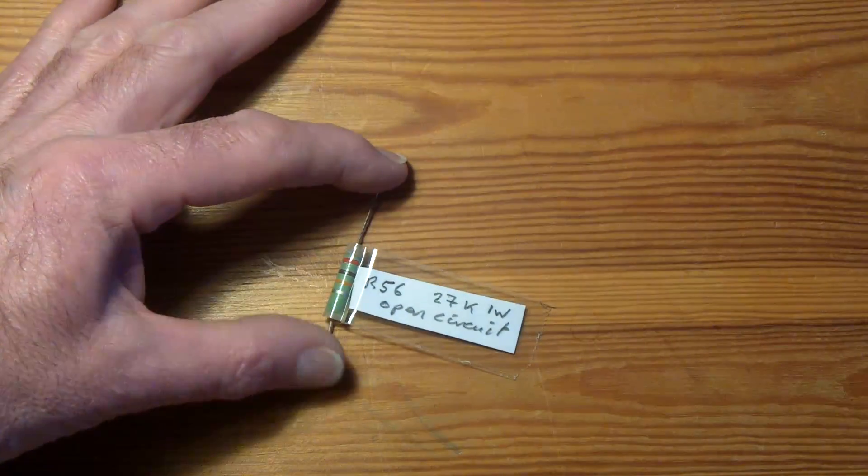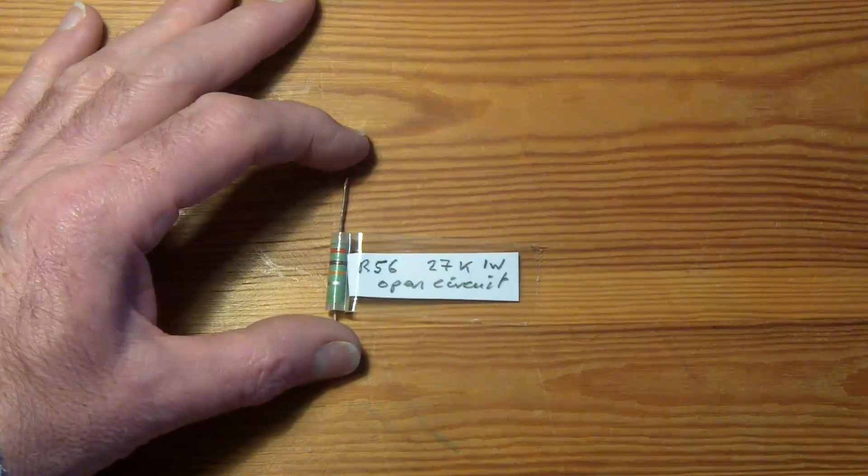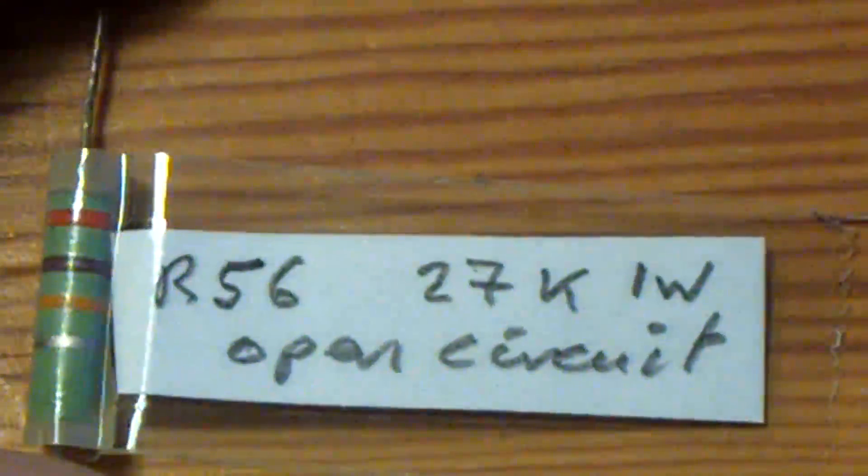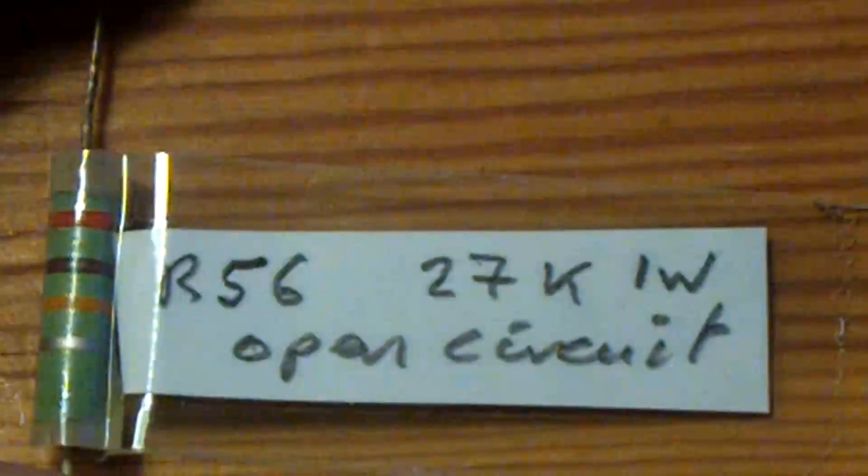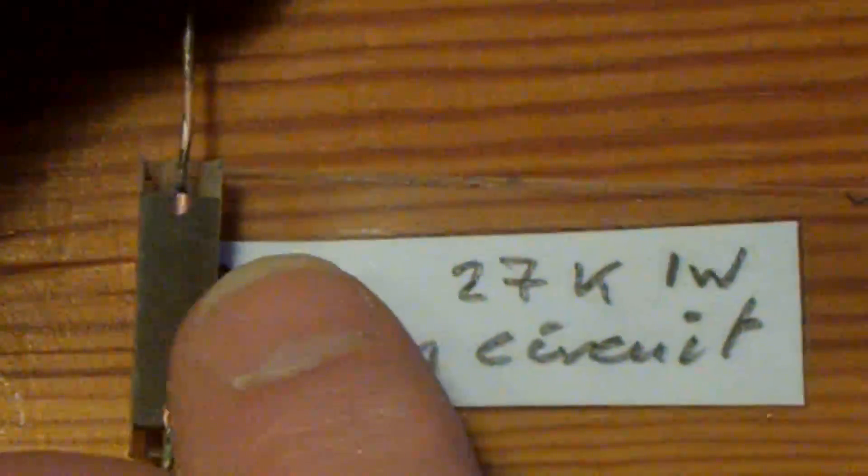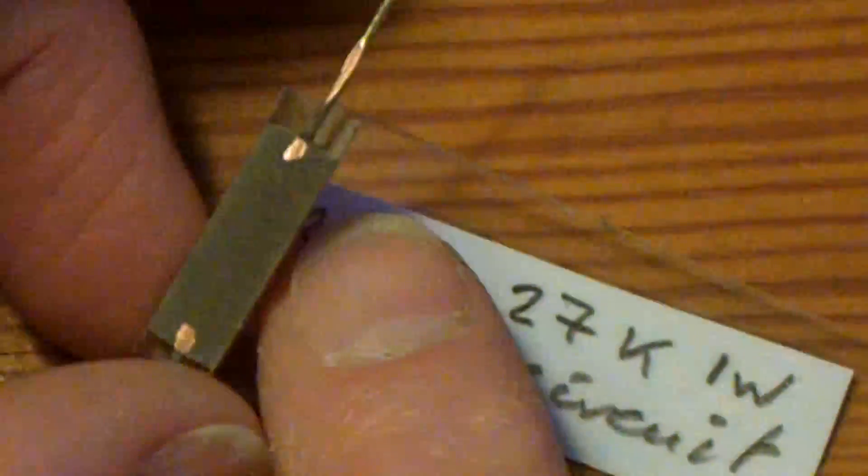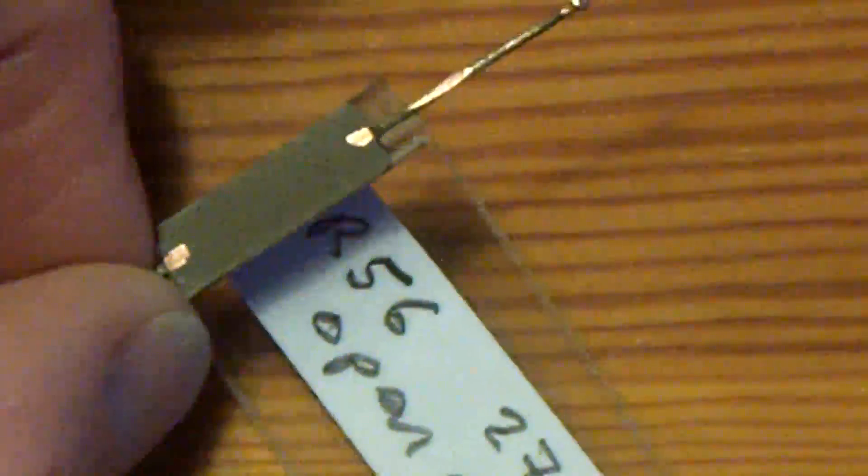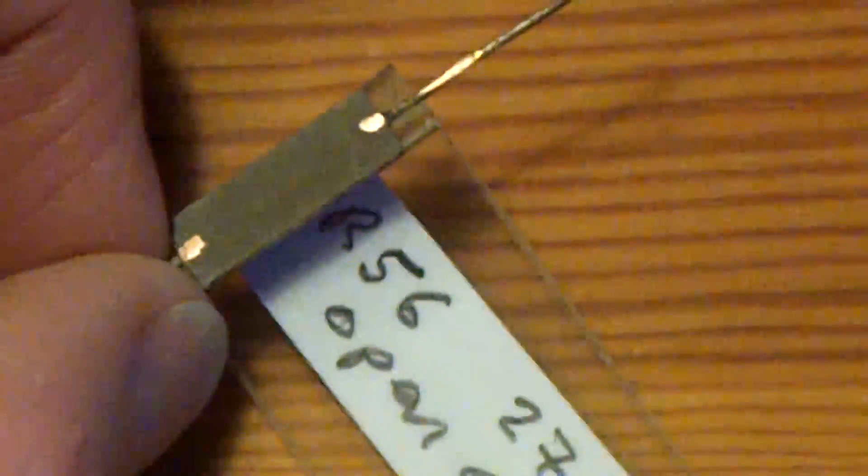This is the 27k resistor I showed you before. I'm always interested in failure modes as I like to understand what's happening with things. I've cut this one in half with a diamond saw, a little diamond wheel, and then emery'd the surface. I'll get some close-ups so you can see what's going on.